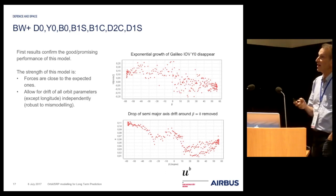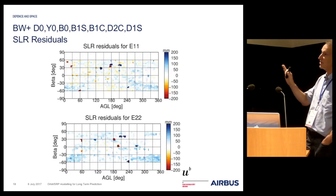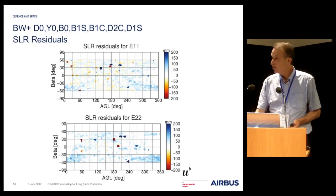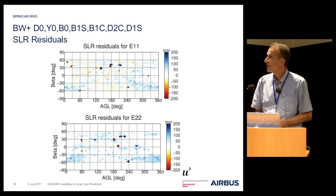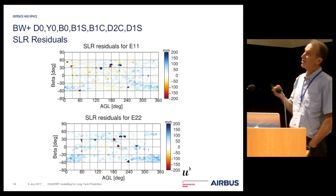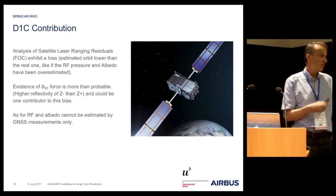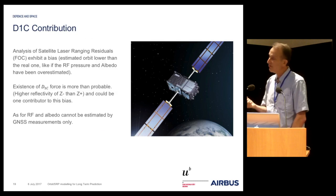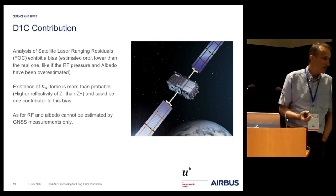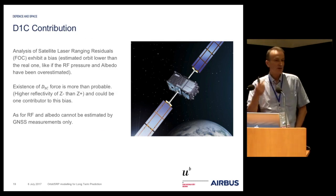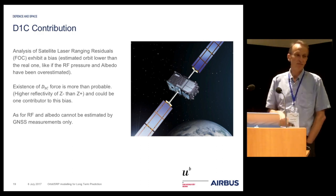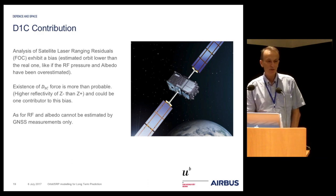Satellite laser ranging residual analysis has been performed, and this is the first result. The result looks relatively good, but it has to be confirmed by further analysis. The question of the D1C contribution remains. There is probably some D1C contribution, as the plus Z-face and minus Z-face have no reason to have exactly the same contribution to the force. If there is some D1C component, there will be some longitude drift or semi-major axis offset.